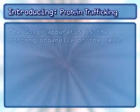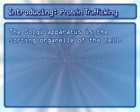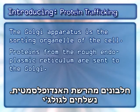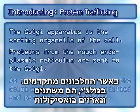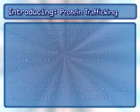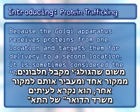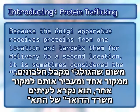The Golgi apparatus is the sorting organelle of the cell. Proteins from the rough endoplasmic reticulum are sent to the Golgi. As the proteins move through the Golgi apparatus, they are modified and packaged into vesicles. Because the Golgi apparatus receives proteins from one location and targets them for delivery to a second location, it is sometimes considered the post office of the cell.